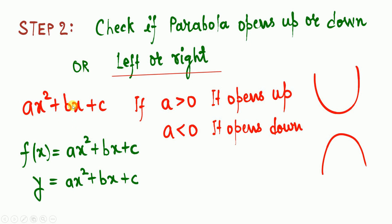If the parabolic function is in terms of x, the parabola opens up or down. If a > 0 it opens up; if a < 0 it opens down. Here a = 3 > 0, so the parabola opens up. If the function is in terms of y, then the parabola opens left or right.